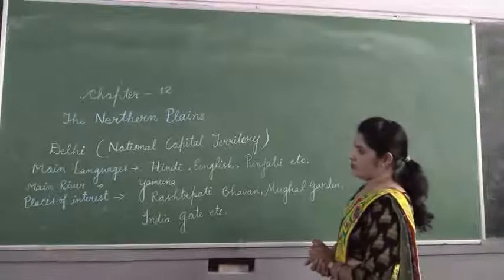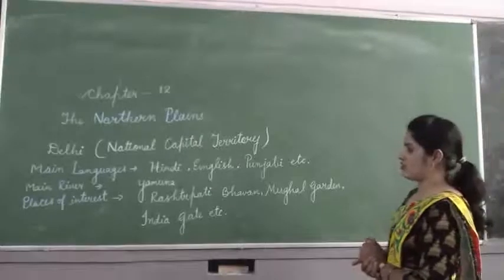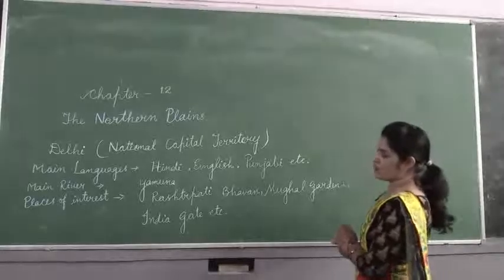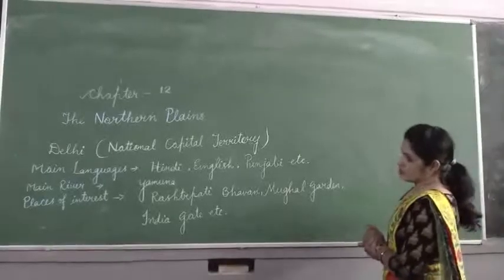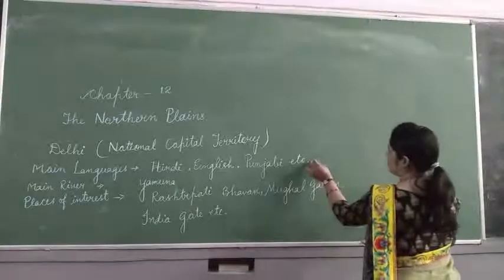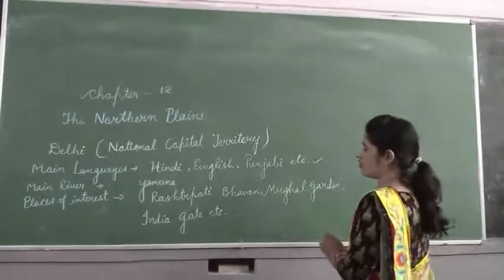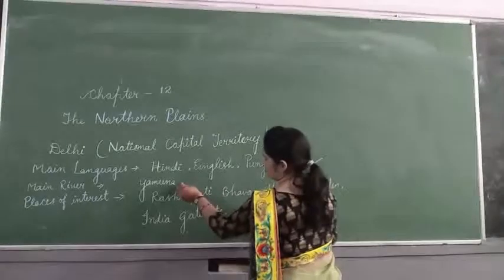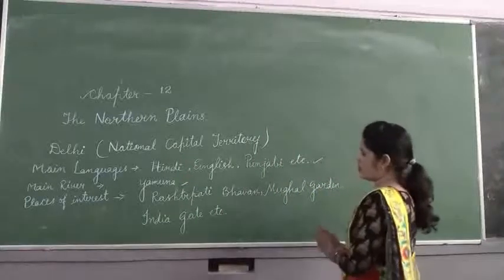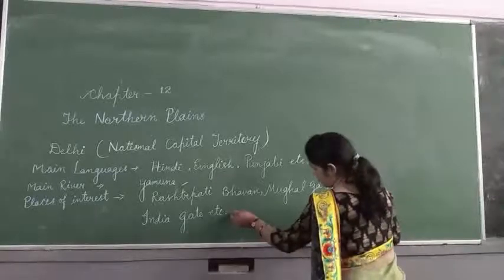Delhi is in the northern part of India. Delhi is the capital of India. The main languages spoken in Delhi are Hindi, English, Punjabi, and some other regional languages. The main river is Yamuna. Places of interest include Rashtrapati Bhavan, Mughal Garden, India Gate, and some more places.